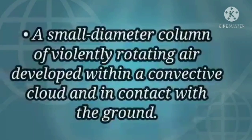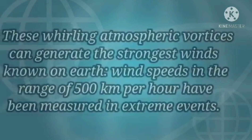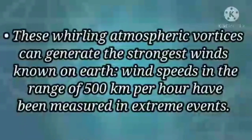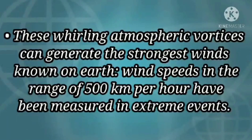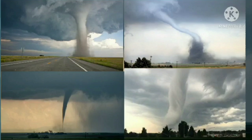A tornado is a small-diameter column of violently rotating air developed within a convective cloud and in contact with the ground. These wild atmospheric phenomena can generate the strongest winds known on Earth — wind speeds in the range of 500 km per hour have been measured in extreme events. The tornado starts small and grows until it reaches the ground, where it becomes more dangerous and destroys houses and structures. Also known as twisters, tornadoes can reach 500 km per hour in rotation.